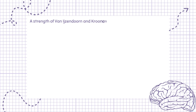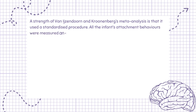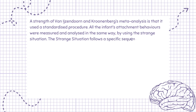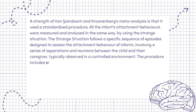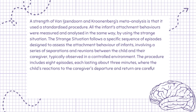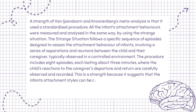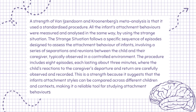A strength of Van IJzendoorn and Kroonenberg's meta-analysis is that it used a standardized procedure. All the infants' attachment behaviors were measured and analyzed in the same way, by using the strange situation. The strange situation follows a specific sequence of episodes designed to assess attachment behavior, involving a series of separations and reunions between the child and their caregiver, typically observed in a controlled environment. The procedure includes eight episodes, each lasting about three minutes, where the child's reactions are carefully observed and recorded. This is a strength because it suggests that infants' attachment styles can be compared across different children and contexts, making it a reliable tool for studying attachment behaviors.